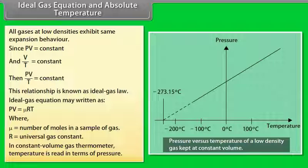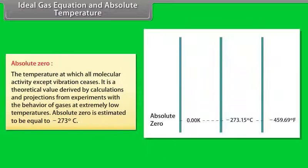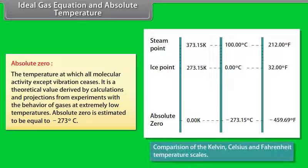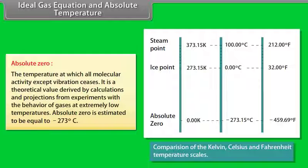In a constant-volume gas thermometer, temperature is read in terms of pressure. The temperature at which all molecular activity except vibration ceases is known as absolute zero. It is a theoretical value derived by calculations and projections from experiments with the behavior of gases at extremely low temperatures. Absolute zero is estimated to be equal to −273°C.